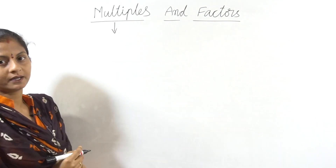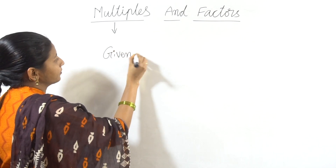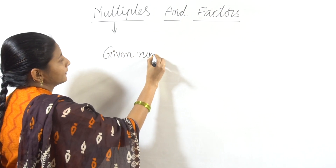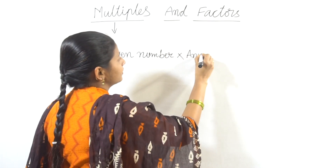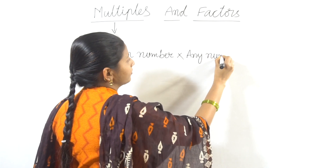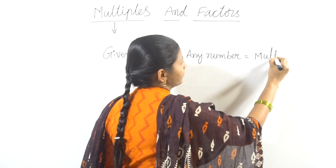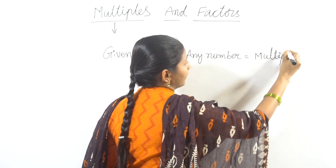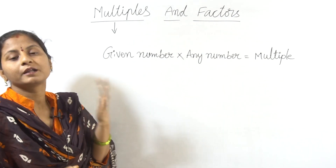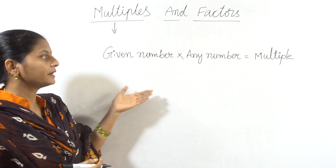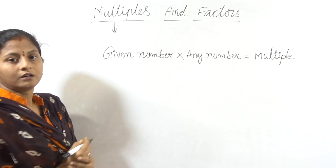Multiples. Simple to say, a given number multiplied by any number — that product is equal to a multiple. Okay?